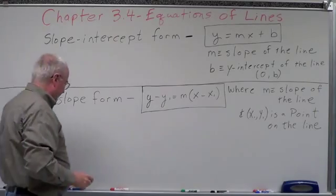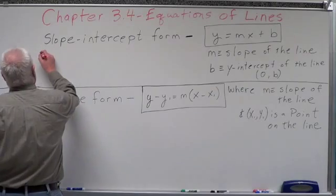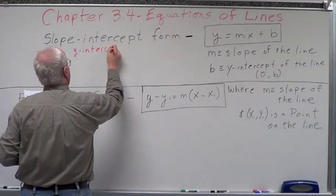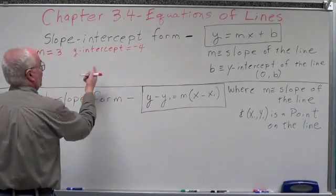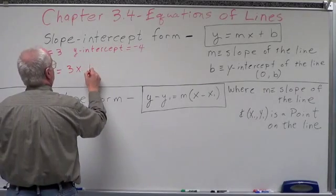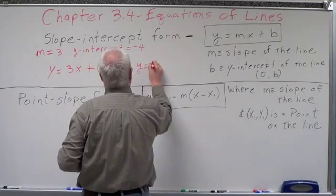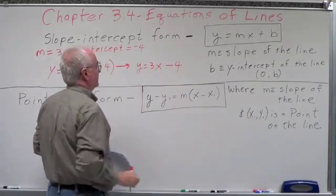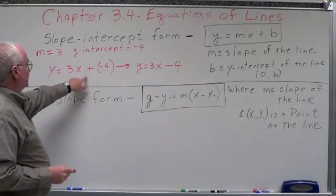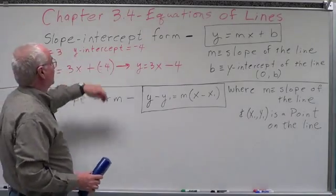Let's take some examples in slope-intercept form and solve them. Let's say m equals three and the y-intercept equals negative four. So what would that be? y equals — m is three, so replace m with three, put the x there, plus negative four. That's the same as y equals three x minus four. The y-intercept is negative four and the slope is three.